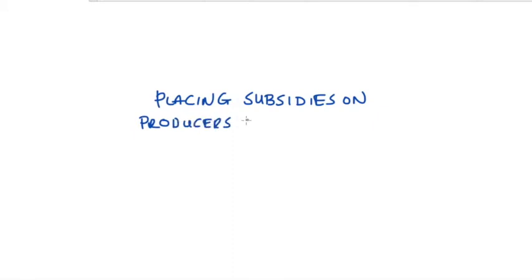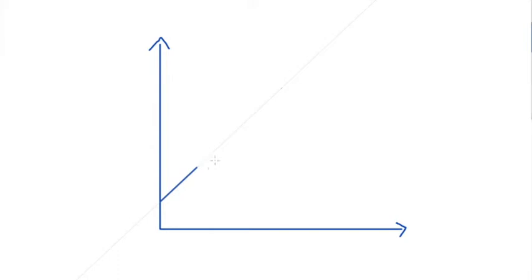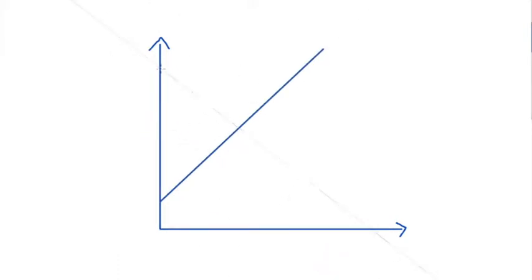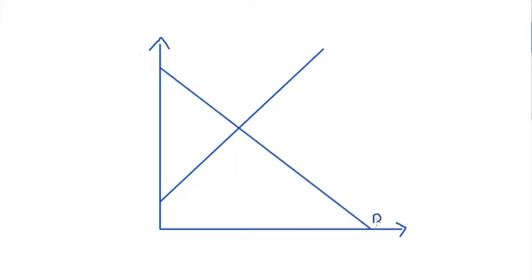Hi everyone. In this video I'm going to look at what happens when we place a subsidy on a producer in perfect competition. I'm going to use a market with an upward sloping supply curve and a downward sloping demand curve. It is possible to think about perfectly inelastic or elastic curves, but in this video I'm just going to stick to the more general cases of regular sloped curves.